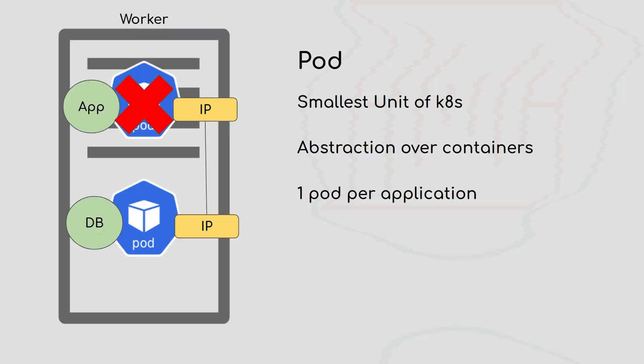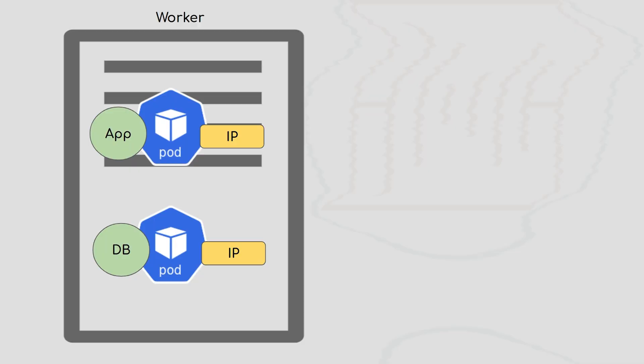If an issue occurs and a pod dies, a new pod is created with a new IP address. In that case, reconfiguration becomes difficult because you had already configured your application to use the old internal IP. Now with the new pod, you'd have to configure it to use the new IP address — and that's where the Service component comes into picture.